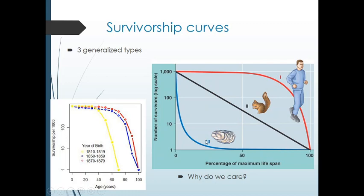Now let's switch over to type 3. This is where basically all the babies die and just a few individuals make it into adulthood and reproduce. These are things like rabbits and oysters — oysters are releasing eggs into the environment and everything, and all the eggs die except for one or two that make it to a good spot. Then there's a variety of organisms somewhere in between, where they have an equal probability of dying throughout their life. These are things like squirrels, where you have a bunch of accidents from falling out of trees and getting eaten by hawks, coyotes, and all sorts of predators.